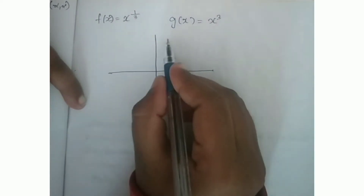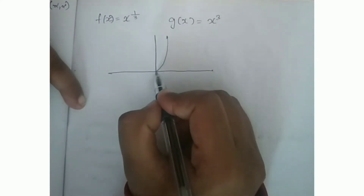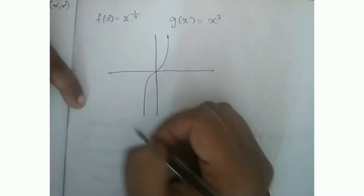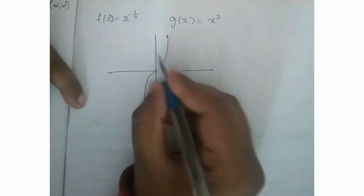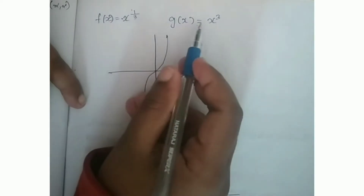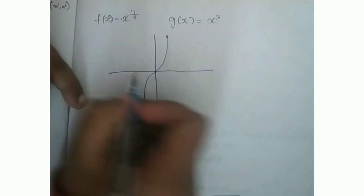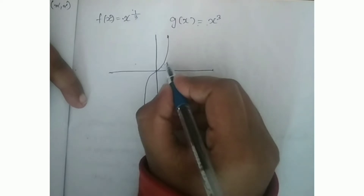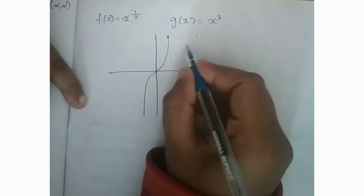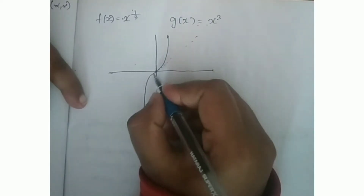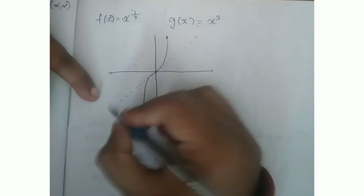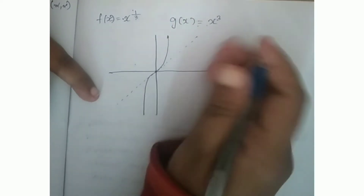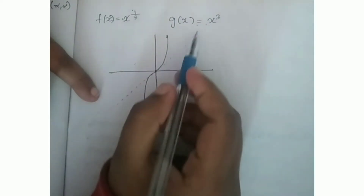We can see the graph here. The graph shows x cubed and x raised to 1 by 3. The inverse relationship is shown where x is equal to y. You can see the x cubed graph and the x raised to 1 by 3 graph on the same axes.